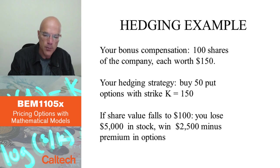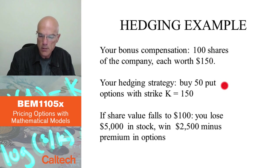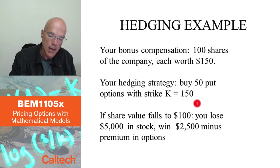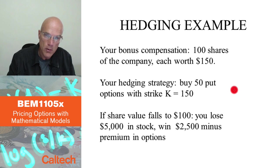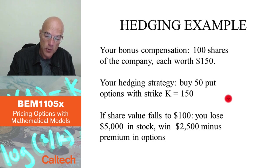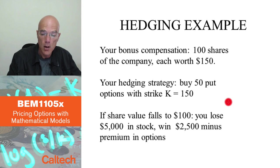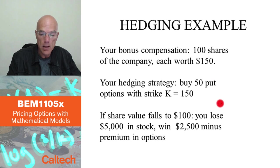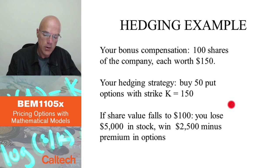In this example, the executive decided to hedge half of the shares. Suppose you buy 50 put options with a strike price of $150. That means at least 50 of those shares — you know you will be able to sell for $150, which is the price today. So you are guaranteed to be able to sell your shares for $150 five years from now by buying these 50 put options. That's exactly insurance against the fall of the stock price of the shares you received.